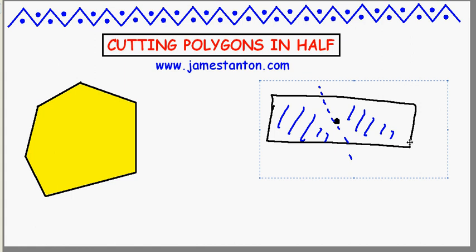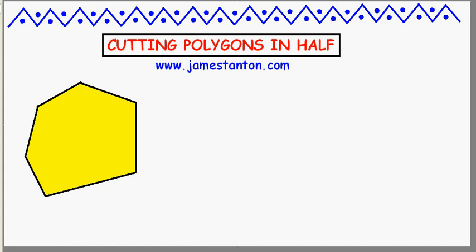Parallelograms have that property. Regular octagons have that property. So they're definitely shapes out there. So the question is, can we classify them and figure out what common feature they all have?